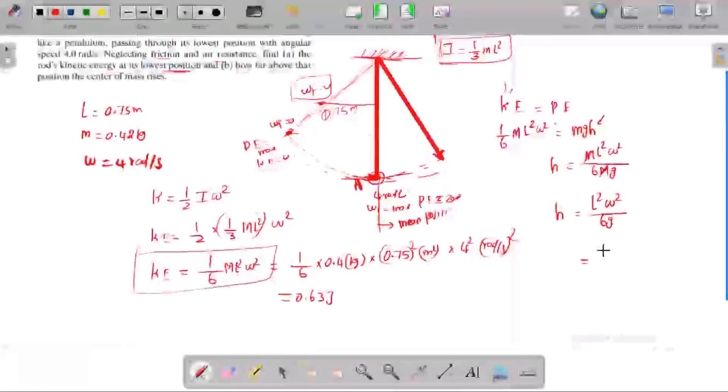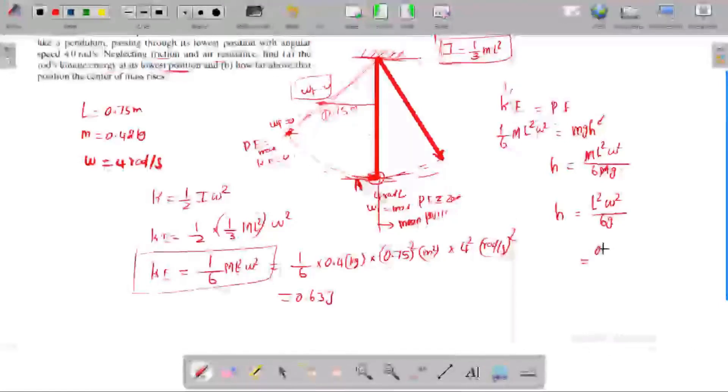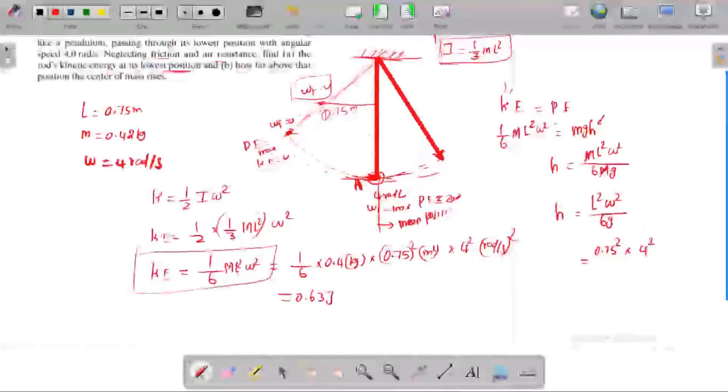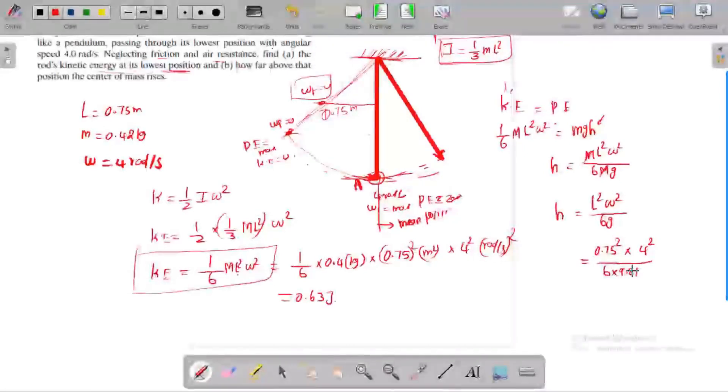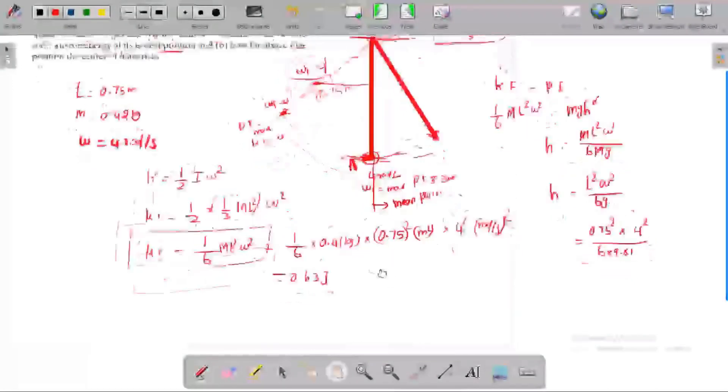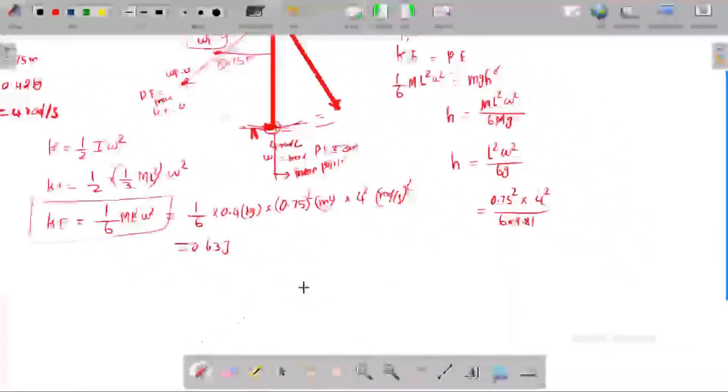What is the value of L? L is 0.75 squared, omega is 4 squared, divided by 6 times 9.81. By doing a simple calculation, the answer is 0.153 meters.